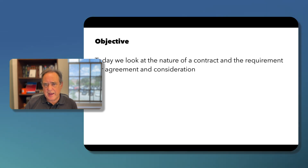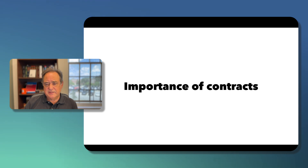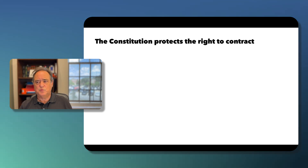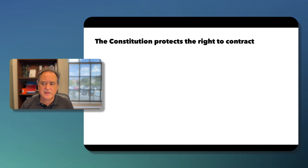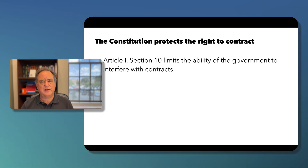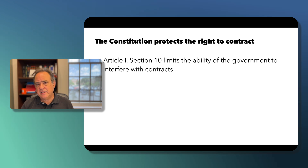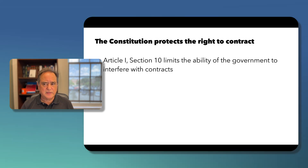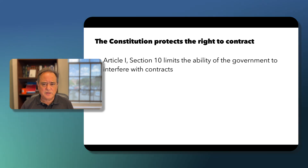Today we're going to look at the nature of a contract and the requirements for agreement and consideration — two elements of a contract. Contracts are so important that even the Constitution of the United States protects the right to contract. Article 1, Section 10 limits the ability of the government to interfere with contracts.